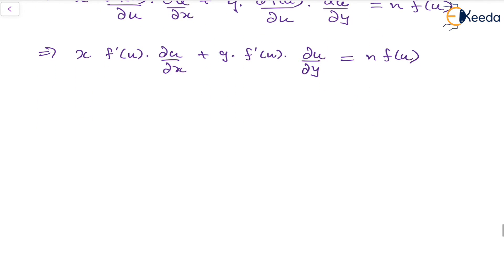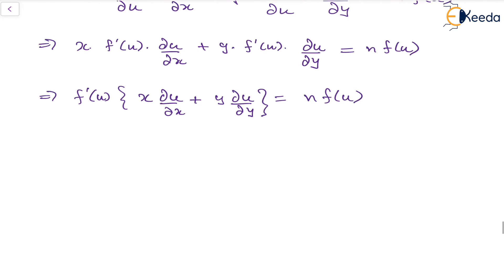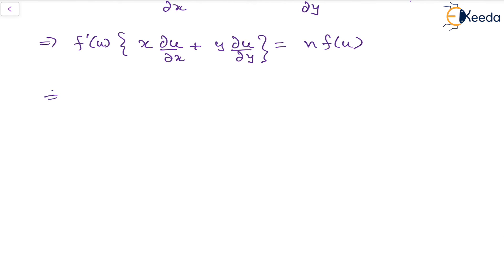We can take f'(u) common and write it as f'(u) times (x du/dx plus y du/dy) equal to n times f(u). Taking f'(u) to the right side, we have x du/dx plus y du/dy equal to n f(u)/f'(u).